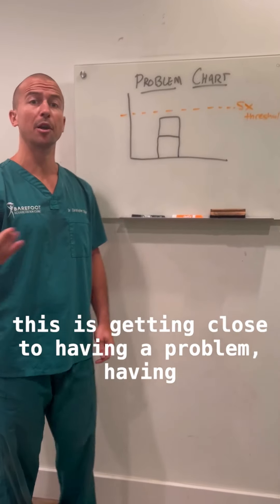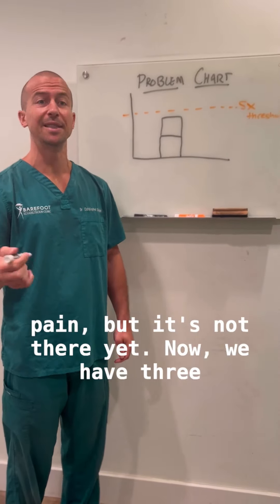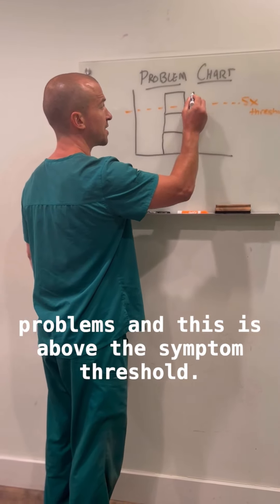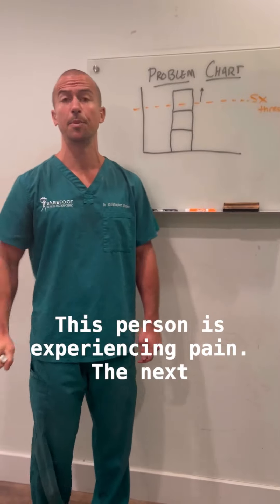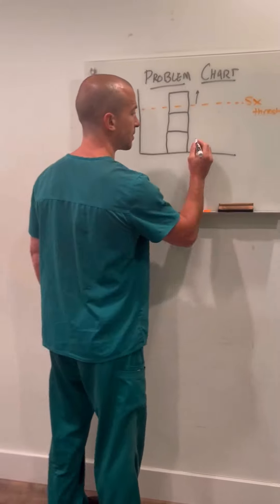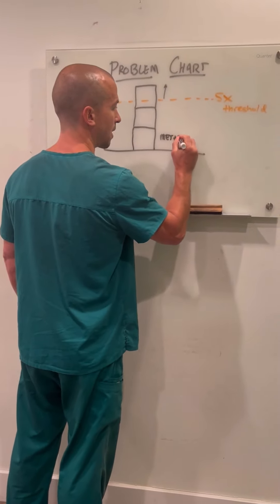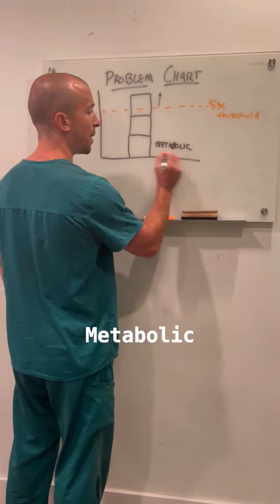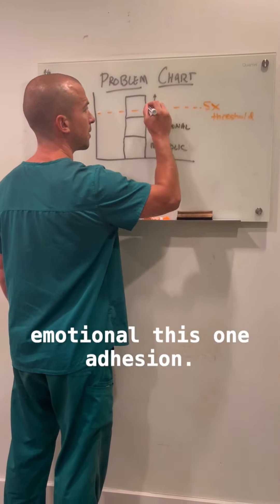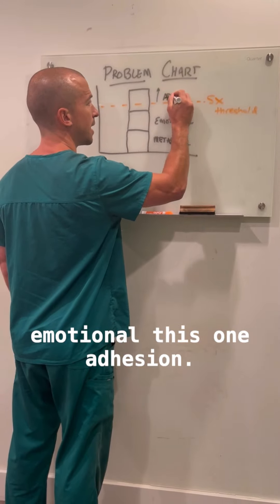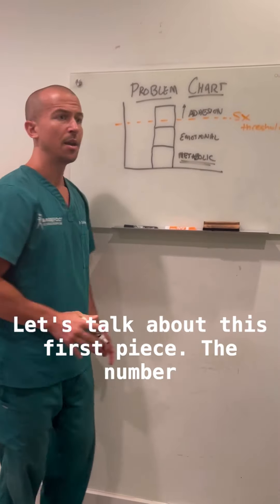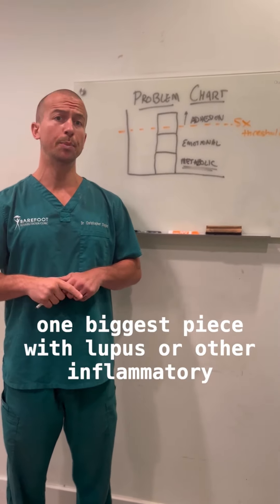Getting close to having pain, but it's not there yet. Now we have three problems, and this is above the symptom threshold — this person is experiencing pain. What are these three problems? Metabolic, emotional, and adhesion.